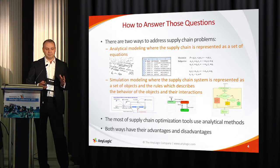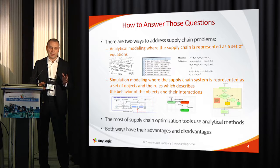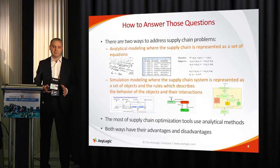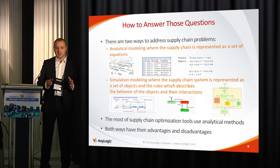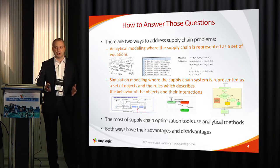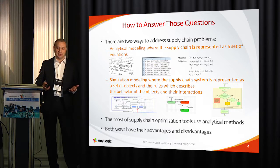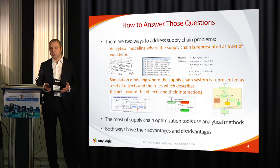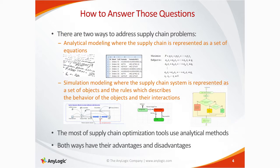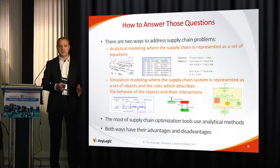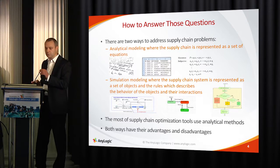There are two main ways to answer those questions. The first, which is well known to you, is the analytical approach — using formulas, spreadsheets, and equations to describe your supply chain. The second, which you're also aware of, is simulation modeling, which describes a supply chain as a set of rules — you describe the behavior, how your supply chain works. Currently, most supply chain optimization tools use analytical methods, and both methods have advantages and disadvantages. Let's talk a bit more about them.